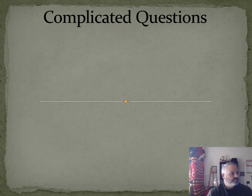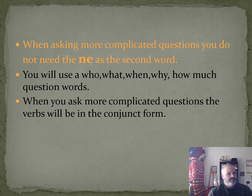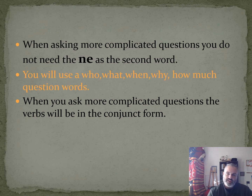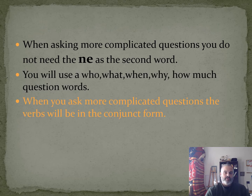When asking more complicated questions, you don't need 'nay' as the second word as you use with basic simple questions. When asking these complicated questions, you'll use those who, what, when, where, why, how much question words. Also, when you do these more complicated questions, the verbs are going to be in the conjunct form.